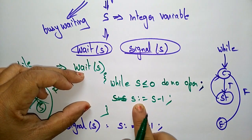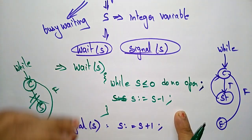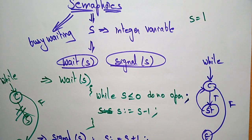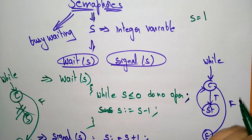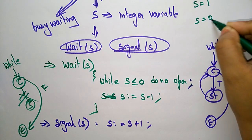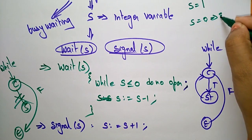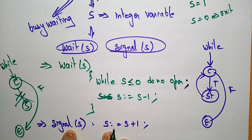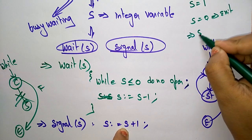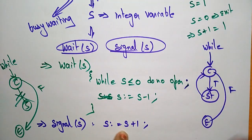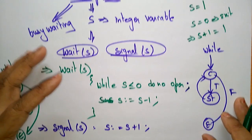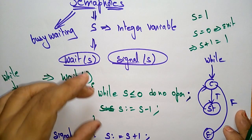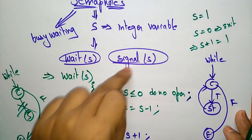One process is executing without busy waiting. Why are we decrementing with S equals S minus 1 and using S equals S plus 1? Whenever the semaphore value S is 1, only that process will enter into the critical section; other processes will not. After decrementing the value, S becomes 0, so the next process exits. If another process wants to execute again in the critical section, that is why we use the signal operation S equals S plus 1, incrementing S to 1 so the next process can enter the critical section. That is the concept of the semaphore.